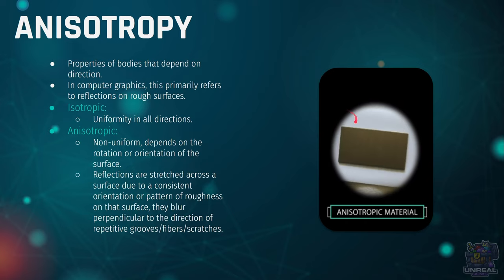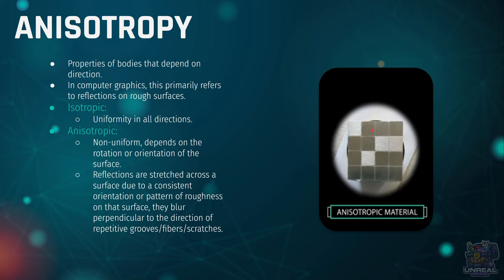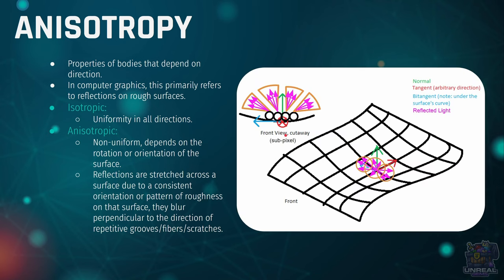As the direction changes depending on the specular highlight on those micro-grooves, you are going to see the direction of the specular highlight change. Looking at a sub-pixel diagram of how light behaves, you can see that the grooves run along the tangent vector, so the specular highlight is going to be stretched perpendicularly — in the bitangent direction. The different specular lobes add up and blur the specular reflection perpendicularly to the grooves of the surface. That's why you see the specular highlight stretched when you use anisotropic materials.